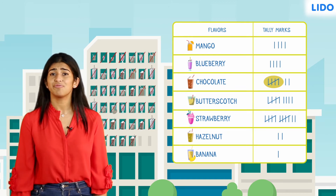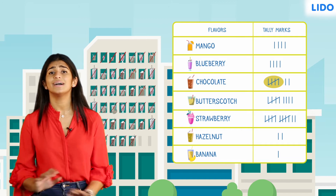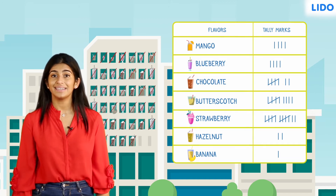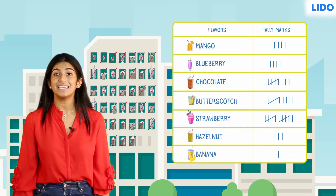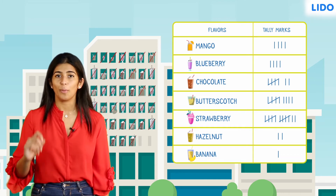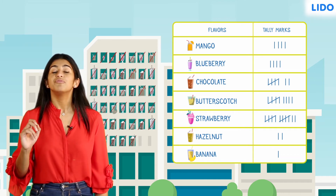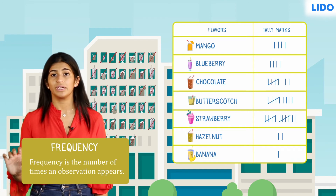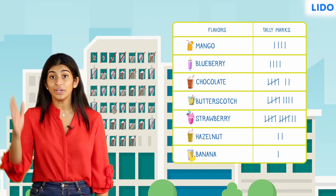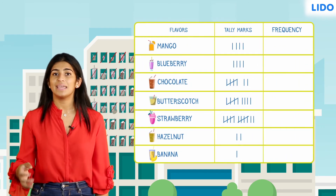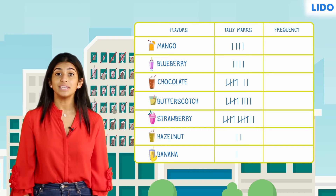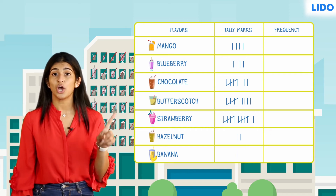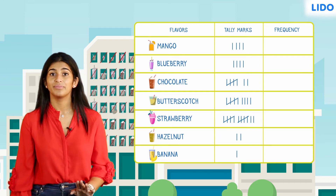Making sets of five makes counting quicker and easier. Now that we have organised our data, let's find out the frequency of each observation. Frequency is the number of times an observation appears. So, we add another column and name it frequency. To fill this column, count the number of tally marks for each observation and write its number.